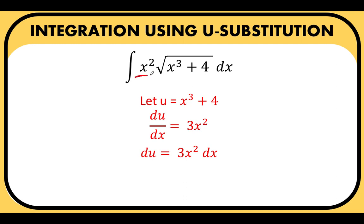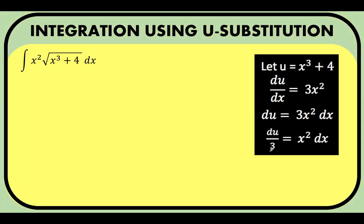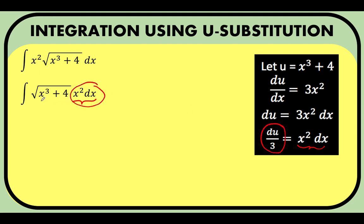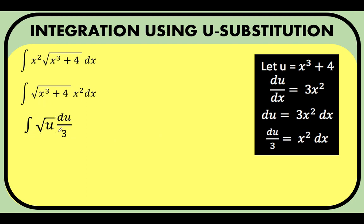We have a minor issue: the integrand has x squared, but our expression has 3x squared. Since 3 is a constant, we divide both sides by 3 to get du over 3 equals x squared dx. So x squared dx equals du over 3. Using the commutative property to rearrange the factors so that x squared dx is obvious, we substitute: x squared dx becomes du over 3 and x cubed plus 4 becomes u. In effect, this is the antiderivative of the square root of u times (du over 3).